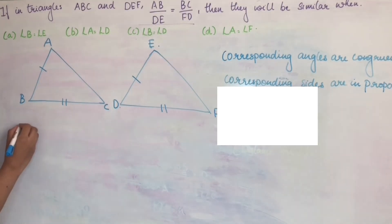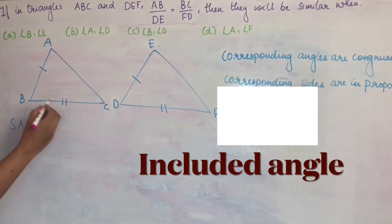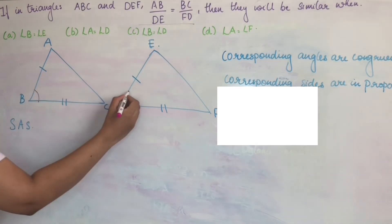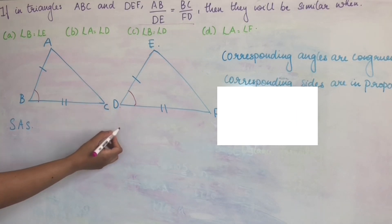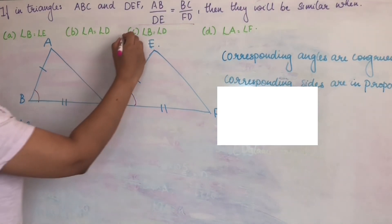you would have included side. Angle B equal to angle D. That is, if angle B is equal to angle D by SAS criteria, we can see that these two triangles are similar. So answer is option C.